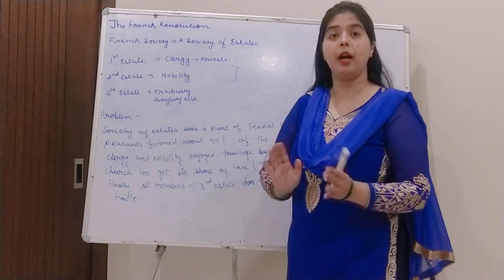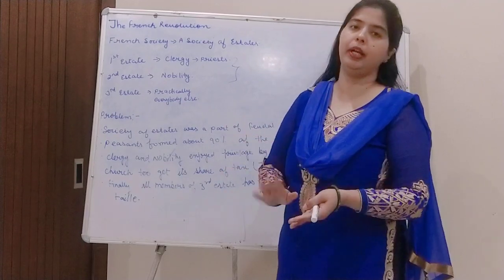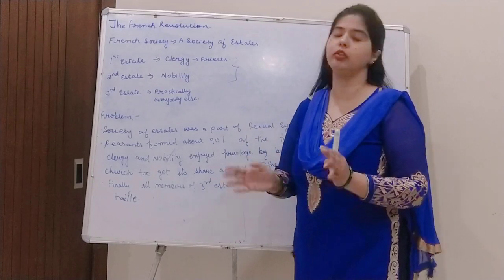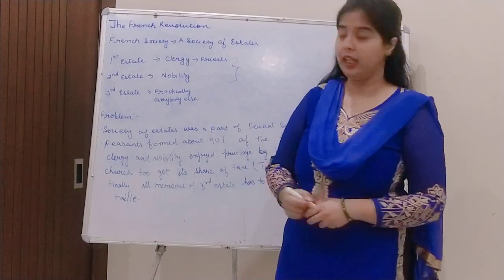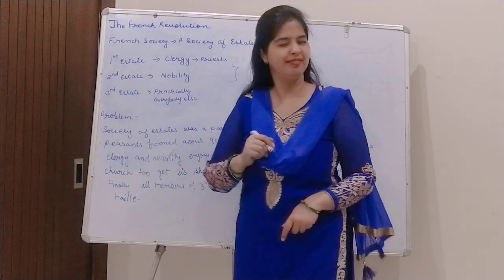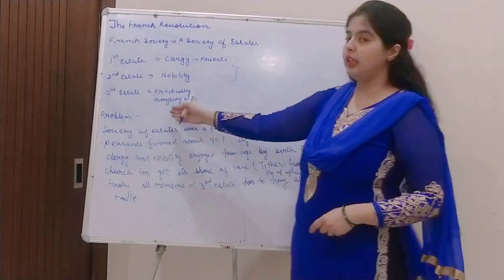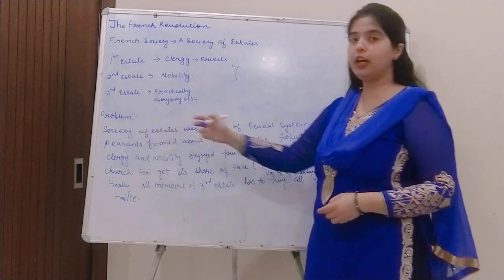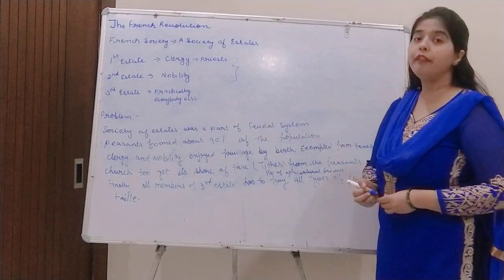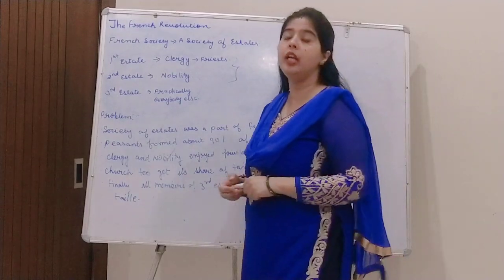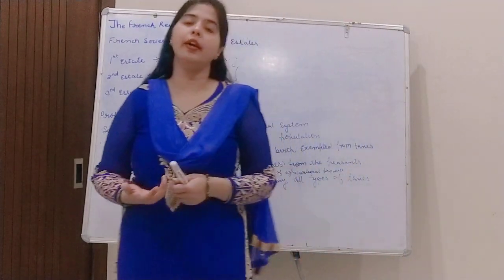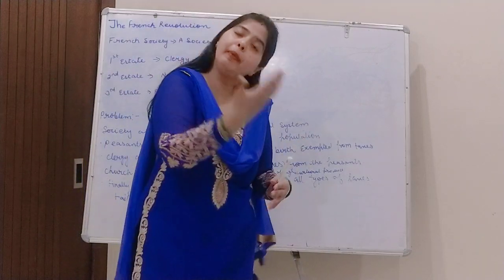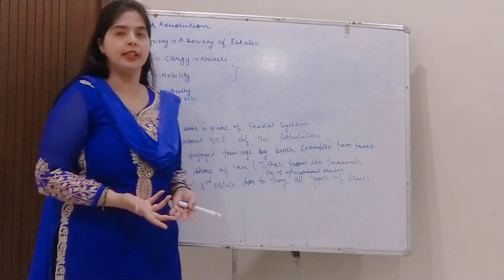So this poor third estate had to pay multiple taxes from multiple directions. This was a major problem for them. The society of estates was part of the feudal system. In the feudal system, peasants work on someone else's land and give money from their land.